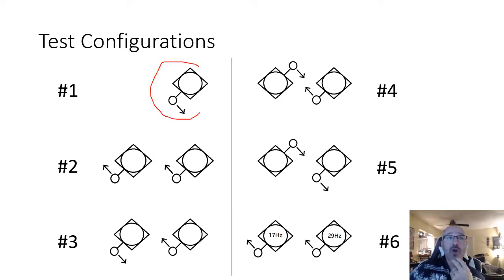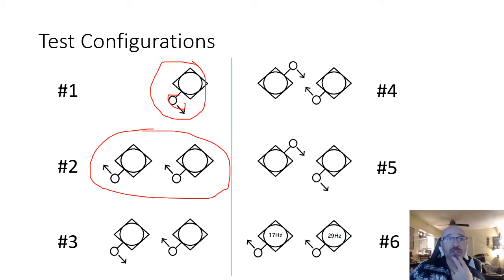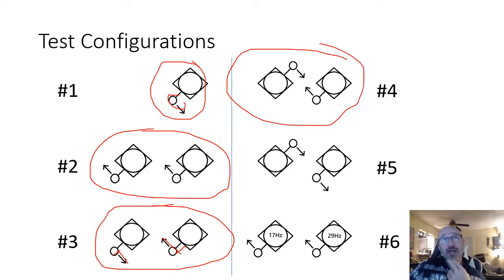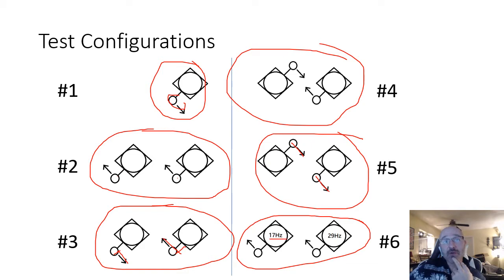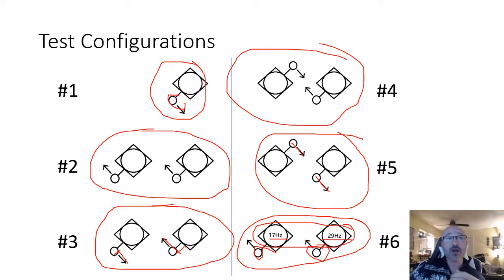The test configurations we varied included: one servo motor with one offset mass; two servo motors and two offset masses both going in the same direction; two servo motors with offset masses spinning in opposite directions; two servo motors with offset masses spinning in opposite directions and 90 degrees out of phase; 180 degrees out of phase; and finally, two servo motors spinning at different frequencies. We could also try all the first five combinations with two different frequencies.